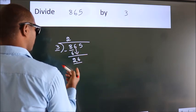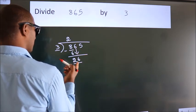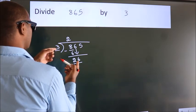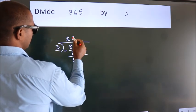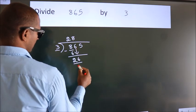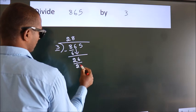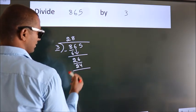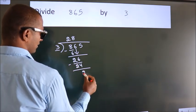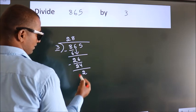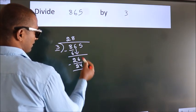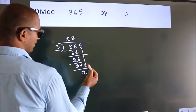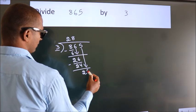So 26. A number close to 26 in the 3 times table is 3 eights, which is 24. Now we subtract. We get 2. After this, bring down the beside number. So 5 comes down.